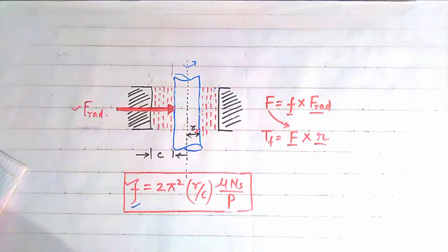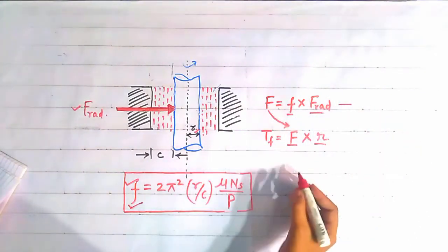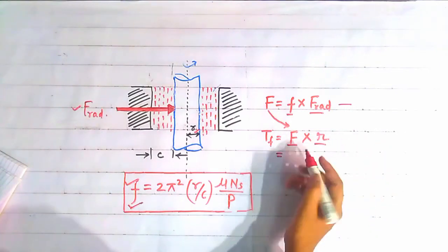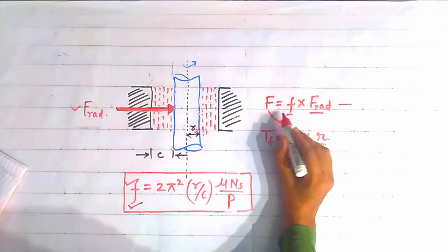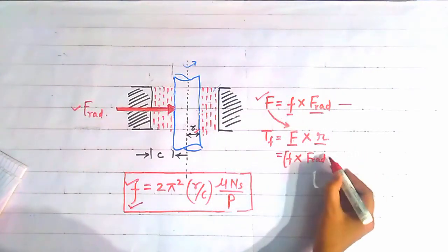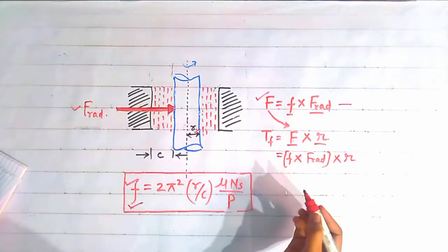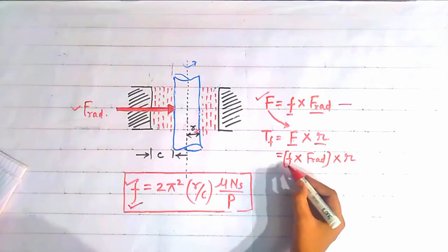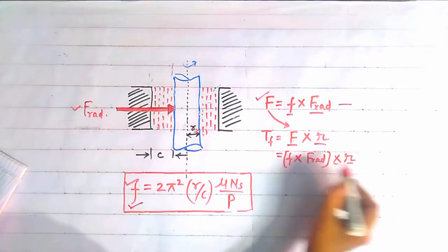According to Petroff's equation, the frictional coefficient is given by this formula. The frictional force equals small f times F_radial. Substituting the value of F from this expression, F equals f × F_radial, and the radius of the journal equals R. So the frictional torque T_F equals f × F_radial × R, and the coefficient of friction is taken from Petroff's equation.